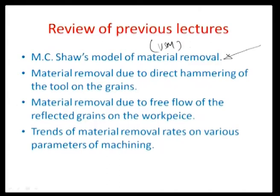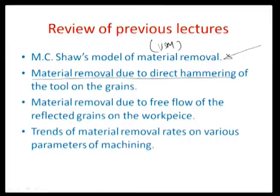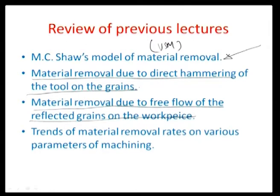We saw that there are 2 ways of material removal: one where material removal is due to direct hammering action of the tool on the grains, and the second where a reflected grain comes off the surface of the tool, impinges onto the work piece, and removes material by flowing it off. These are the 2 principal ways of doing USM.